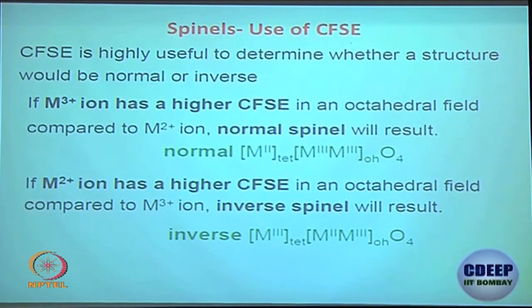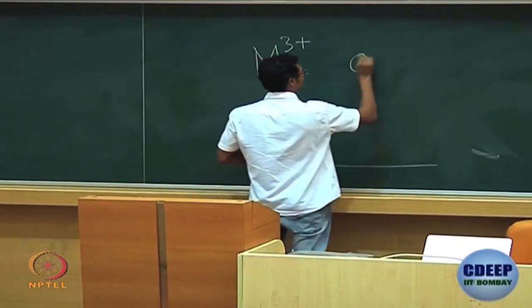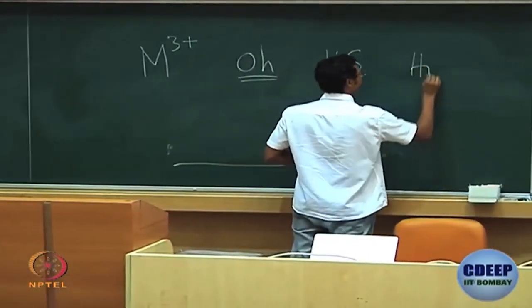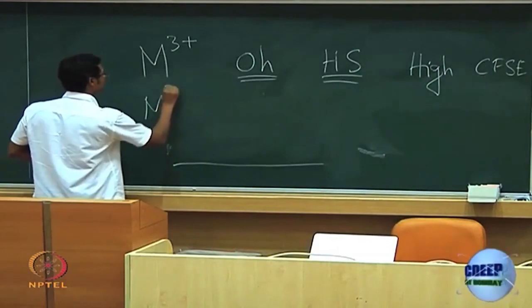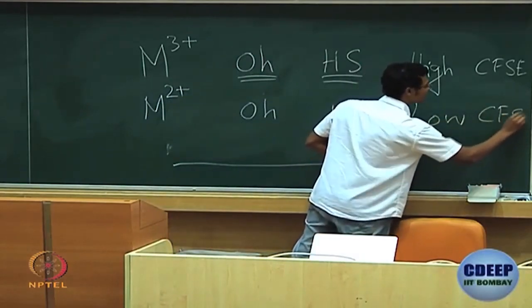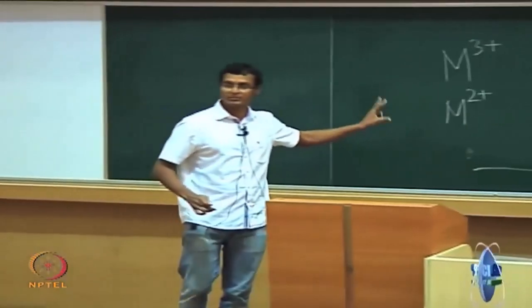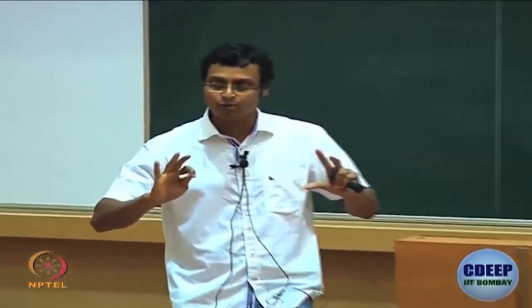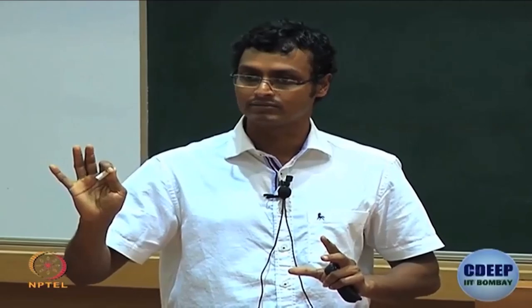In normal Spinel, M3+ in octahedral high spin should have high CFSE, and M2+ octahedral high spin should have low CFSE. Do not mix up by calculating octahedral versus tetrahedral — that leads to the wrong direction. Just calculate the octahedral site stabilization energy.